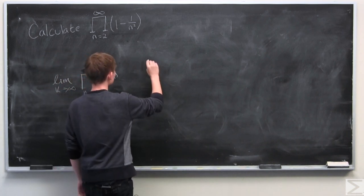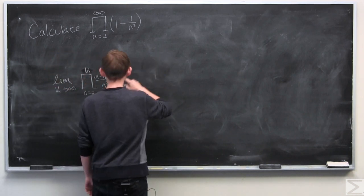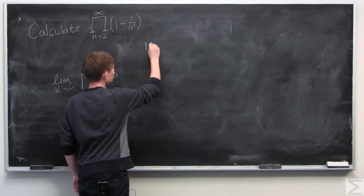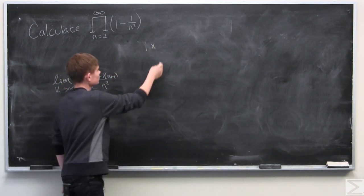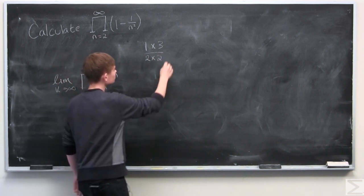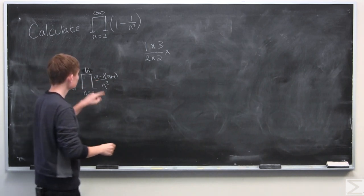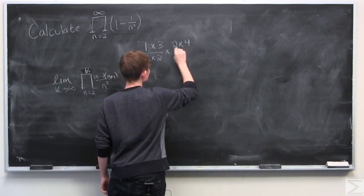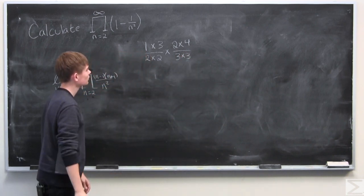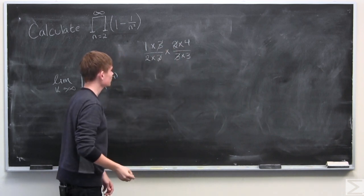And so let's look at when k is equal to 3. We start at 2. We have 1 times 3 over 2 times 2. And then when n is equal to 3 we get 2 times 4 over 3 times 3. And hopefully you can see that we can cancel those out.